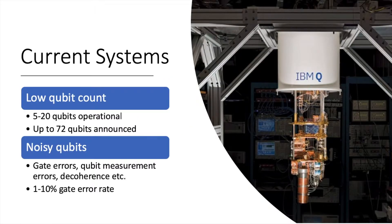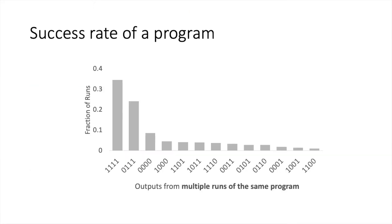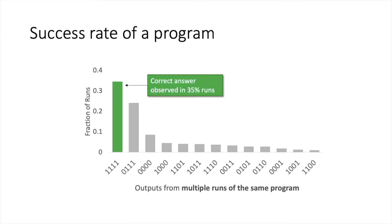Current quantum systems have a small number of noisy qubits. This means that the operations or gates which can be applied have high error rates. Because of noise, quantum programs are run multiple times. The fraction of runs which produce the correct answer is called the success rate of an execution.